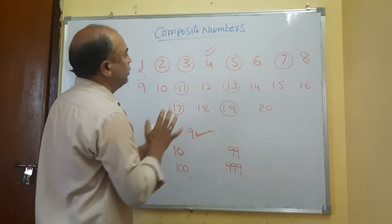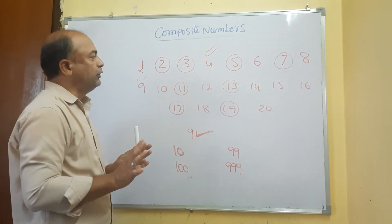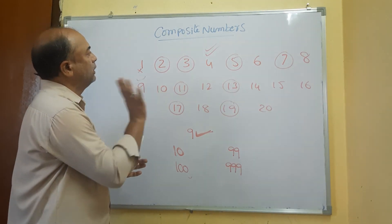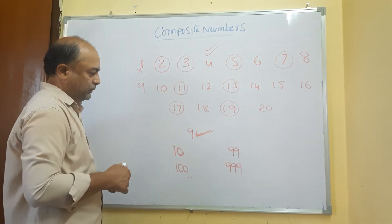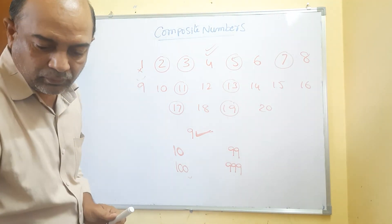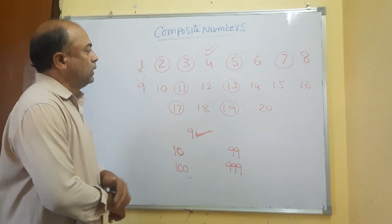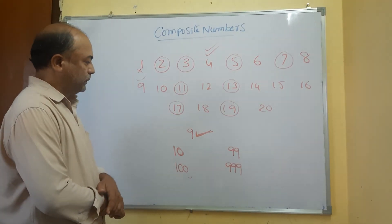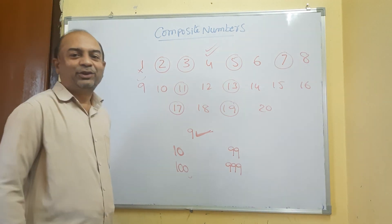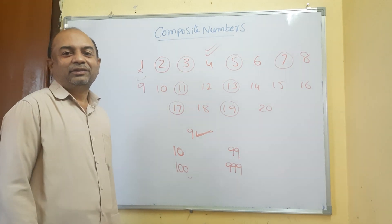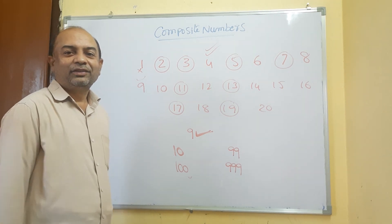These are the composite numbers. Numbers which are not primes are said to be composite numbers. Thank you very much. Please like, share, and subscribe to my channel.